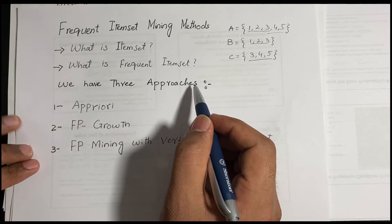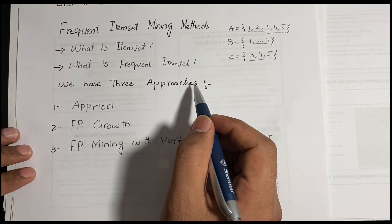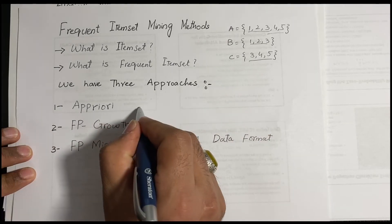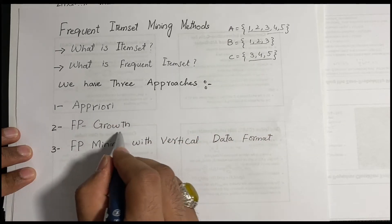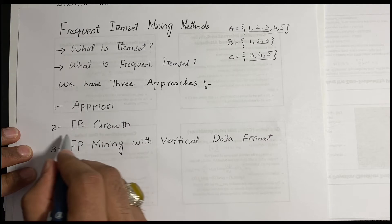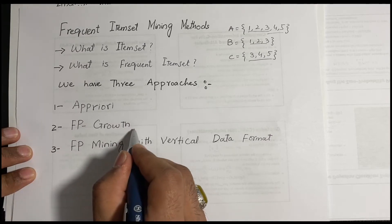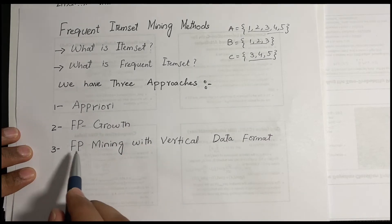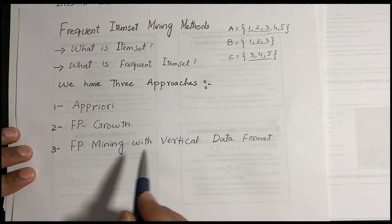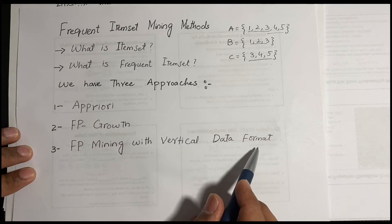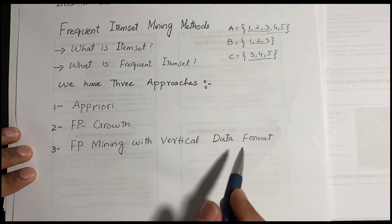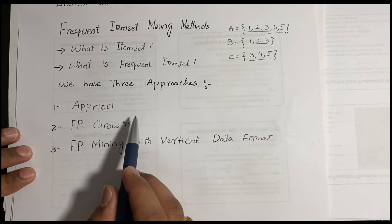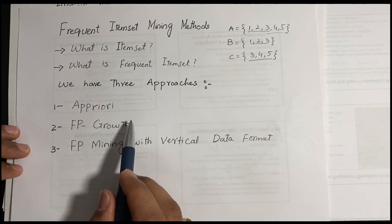We have three approaches to find frequent item sets: first is the Apriori algorithm, second is FP-Growth (Frequent Pattern Growth) algorithm, and third is frequent pattern mining with vertical data format. In this part we will see the Apriori algorithm.